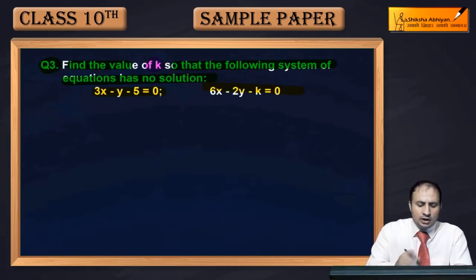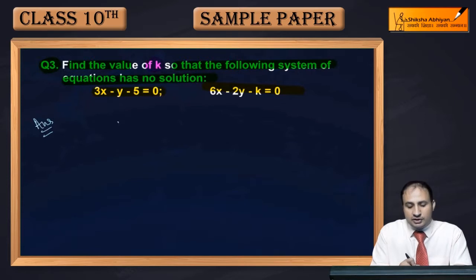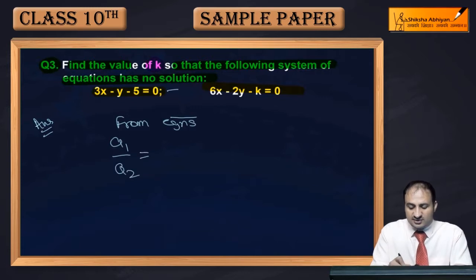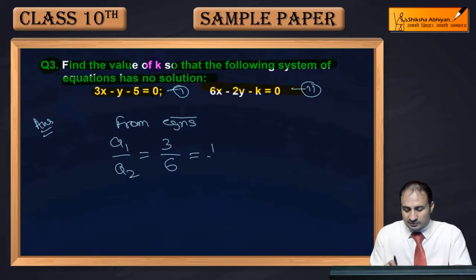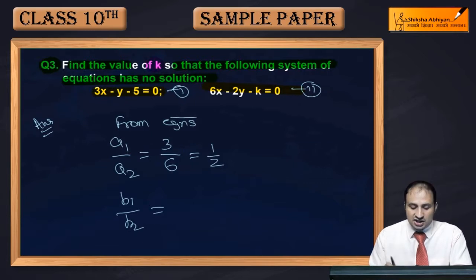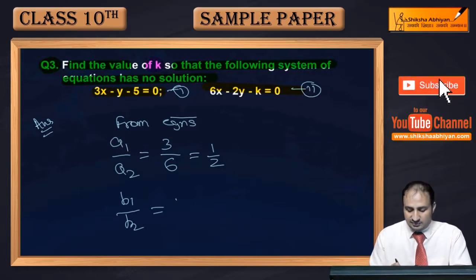From equations: a1/a2, taking the first and second equation x coefficients, first equation is 3 and second equation is 6, so 1/2. b1/b2, first equation y coefficient is -1 and second is -2, so this is 1/2.